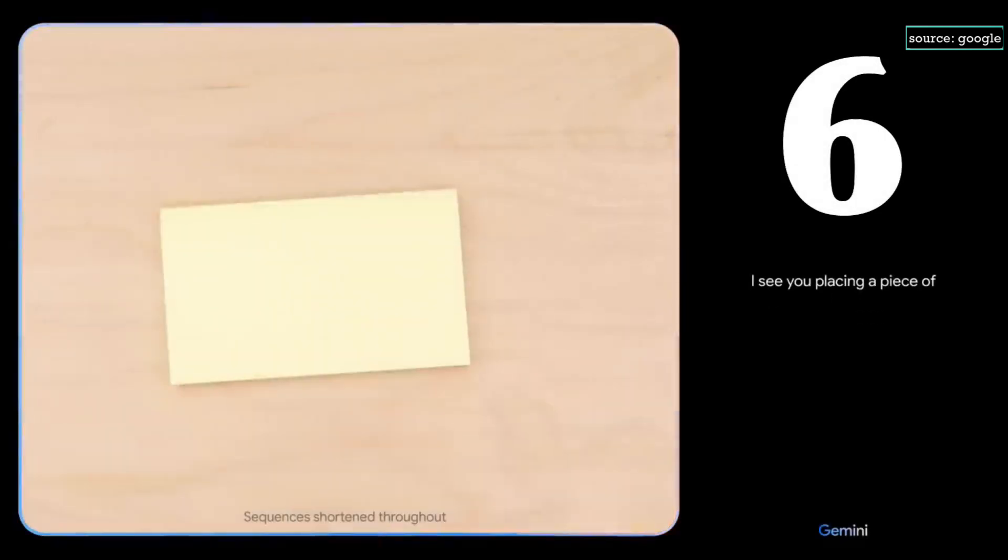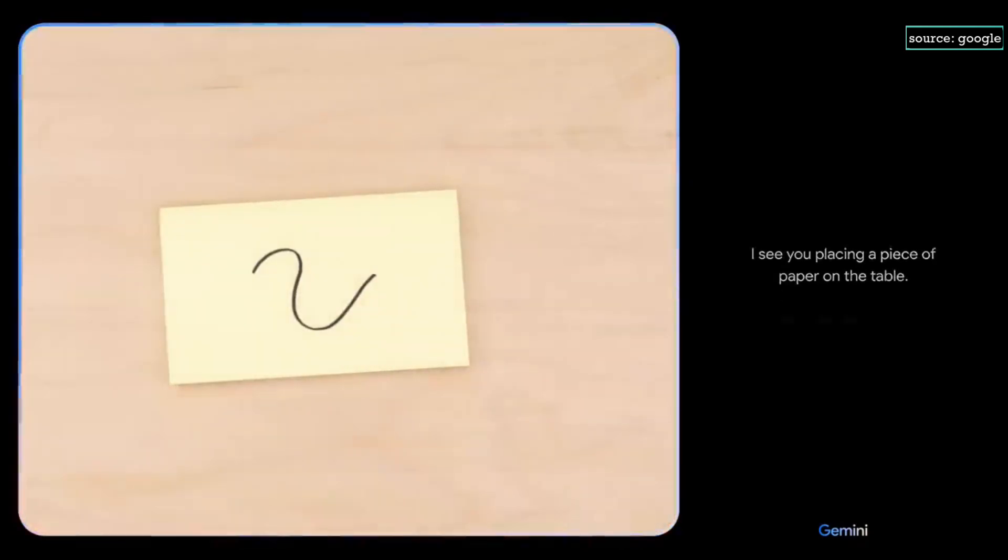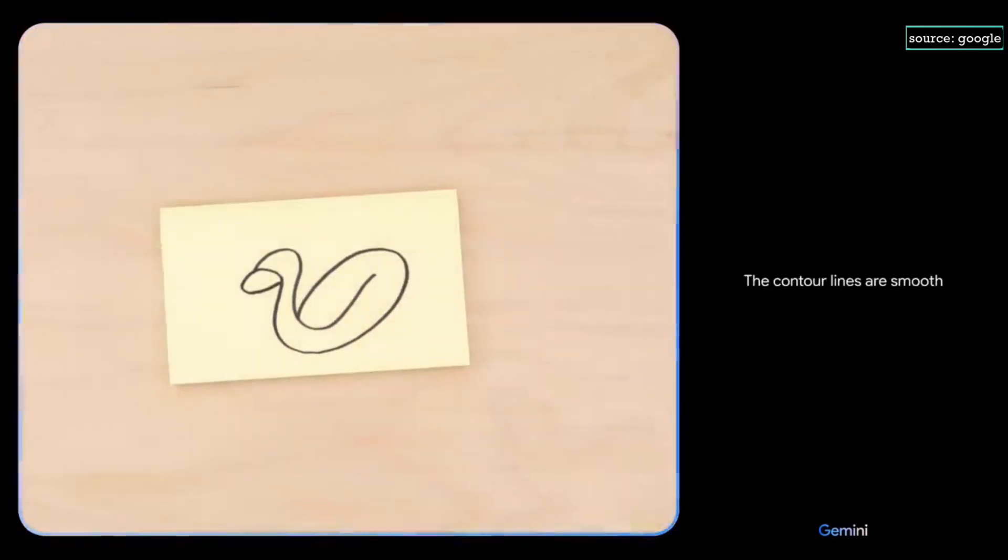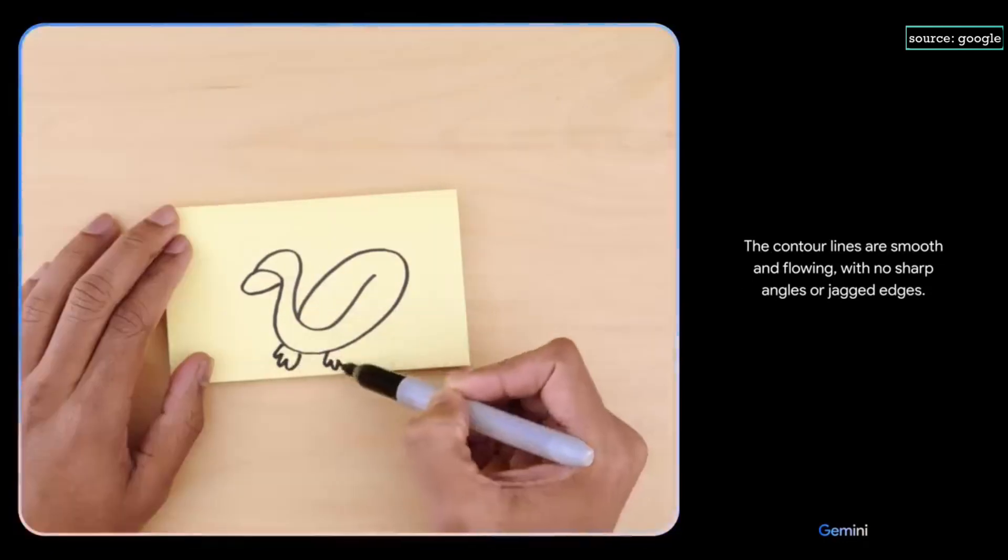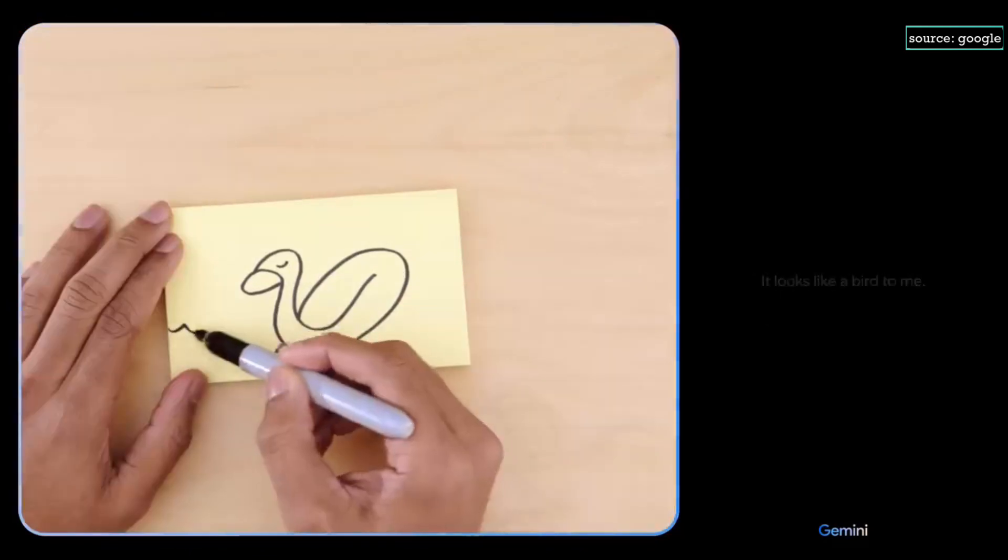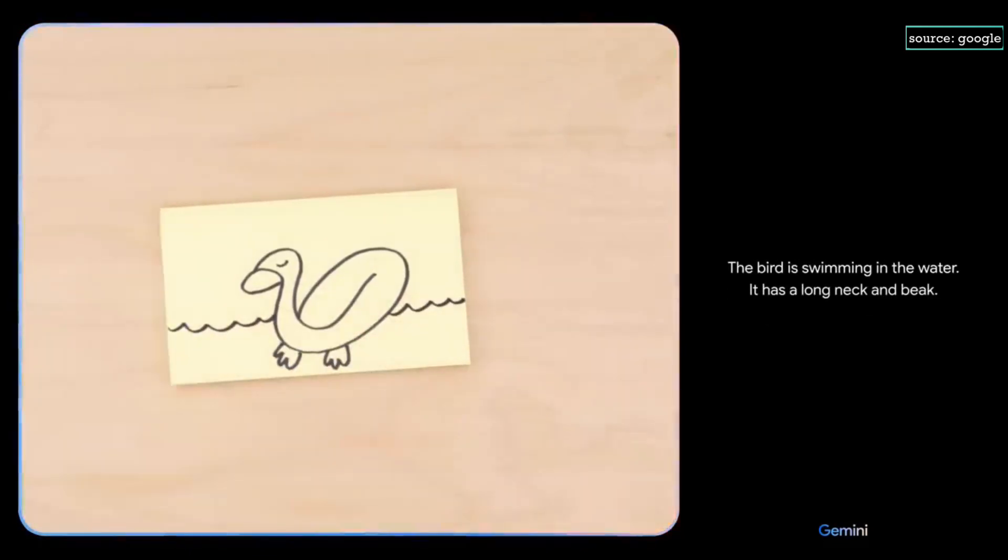Tell me what you see. I see you placing a piece of paper on the table. I see a squiggly line. What about now? The contour lines are smooth and flowing, with no sharp angles or jagged edges. It looks like a bird to me. What if I add this? The bird is swimming in the water. It has a long neck and beak. It is a duck. Yes.